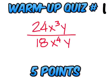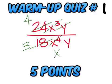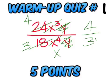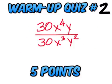6 will go into 24 four times and 18 three times. These cancel out to leave an X on the bottom and these just cancel completely out, so it's 4 over 3X. Answer for this one is X over Y.